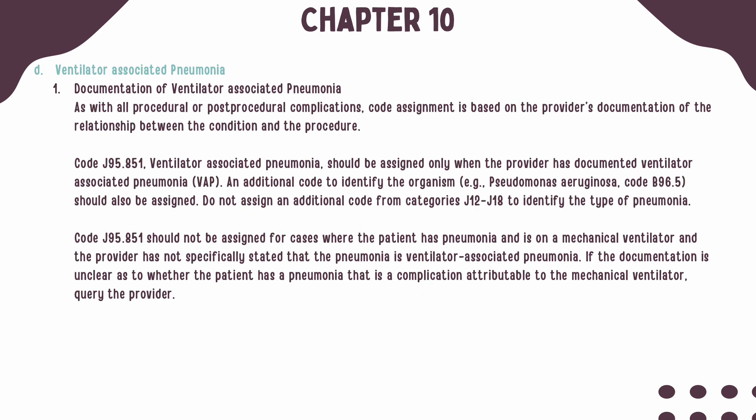Next up is ventilator-associated pneumonia. Code assignment for ventilator-associated pneumonia should be based on the provider's documentation of the relationship between the two. The provider must state that the pneumonia is associated with the ventilator. If they do not state that it is associated and it is unclear, you should query the provider. When it is documented, code J95.851 should be assigned as well as a code to identify the organism. The additional code should not be a code from Categories J12 through J18.